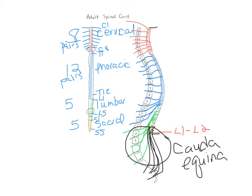Around the cervical area of the spinal cord, there is a cervical enlargement, and in the lower thoracic to lumbar area, there is a lumbar enlargement. These enlargements exist because we need more innervation for the arms and legs, so the spinal cord has a larger diameter in those regions.